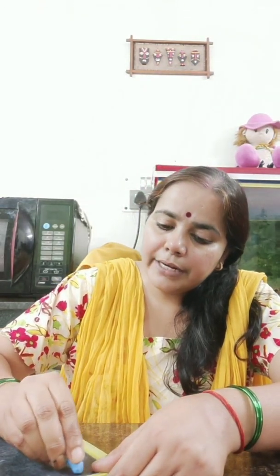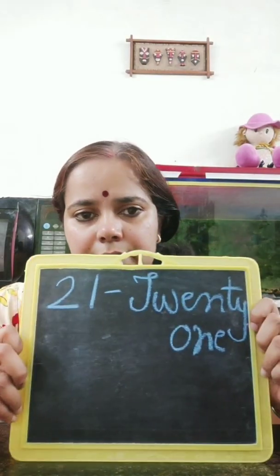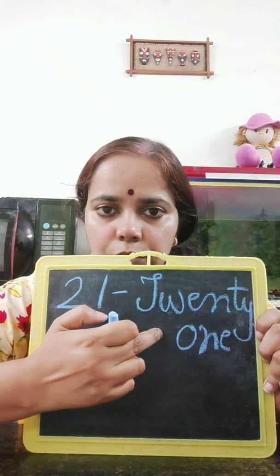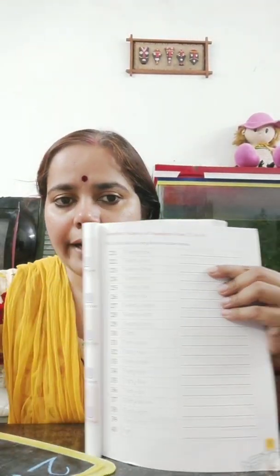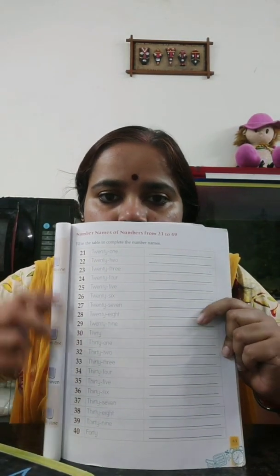Which number will come after 20? 21, 22 — like this, children, how we are going to write. We know the spelling of 20, so we will write 20 first and then write 1. In this way we are going to write all numbers: 21, 22, 23, 24. It's already given in your maths book page 63. You all will do like this — till 29 it's no problem for you all, because we already know the spellings of numbers from 1 to 20 and we had practiced also.